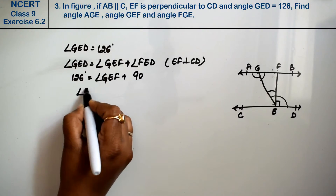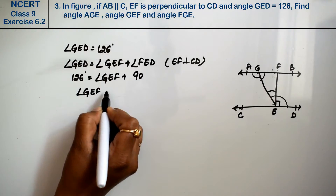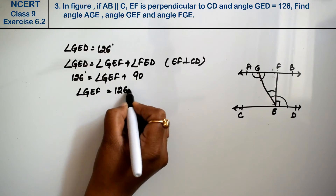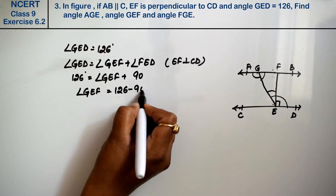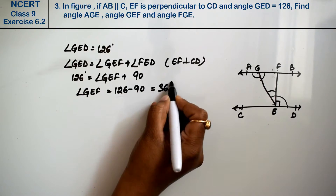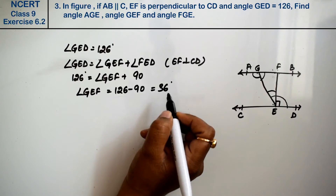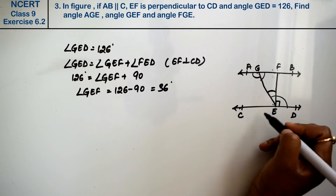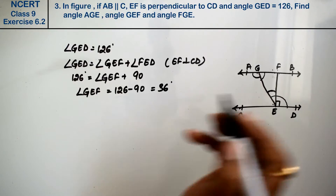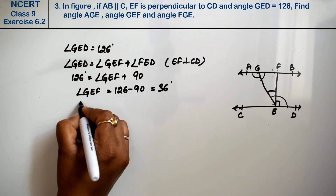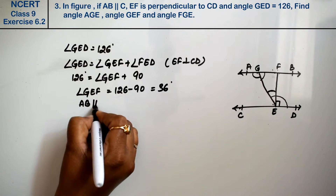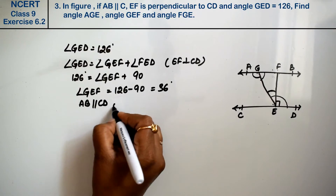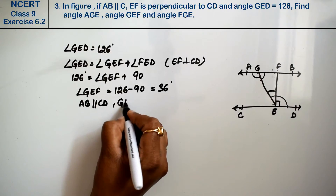So angle GEF equals 126 minus 90, that is 36 degrees.